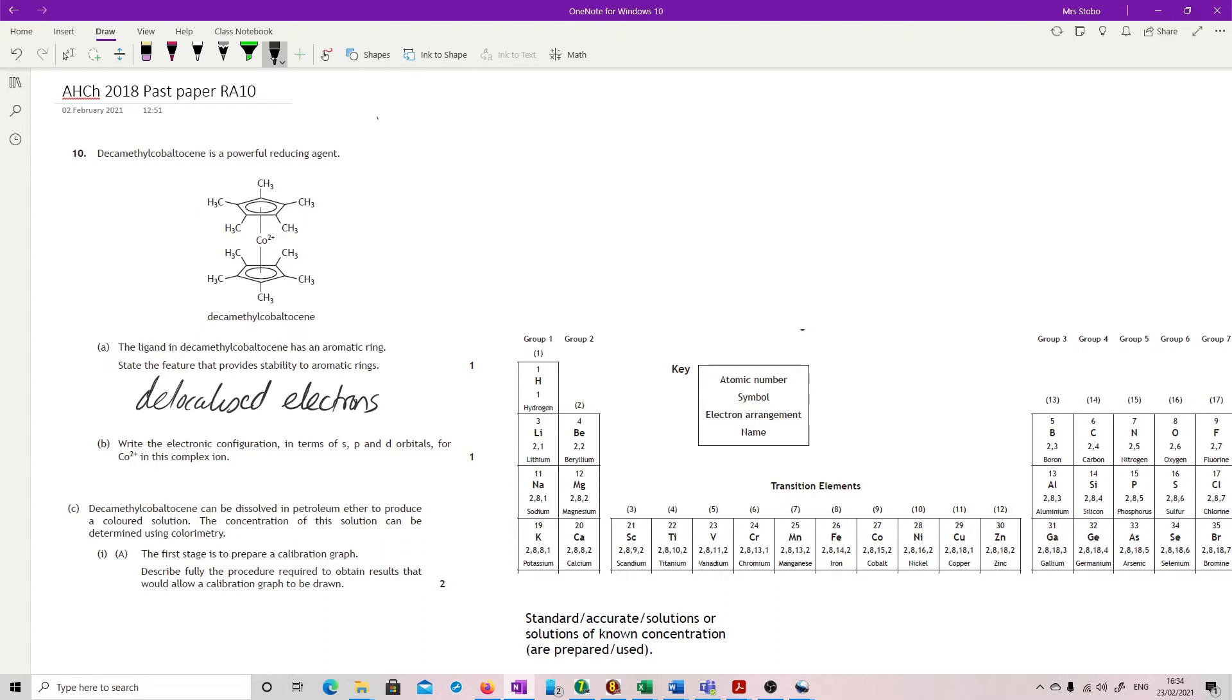Write the electronic configuration in terms of s, p, and d orbitals for the cobalt 2+ in this complex ion. So cobalt is over here. I obviously just pulled out the data book question for this one. So we've got 1s², there's your first level gone, and then we've got 2s², there's this lot, 2p⁶, that's that gone. 3s², 3p⁶, 4s², and 1, 2, 3, 4, 5, 6, 7, 3d⁷.